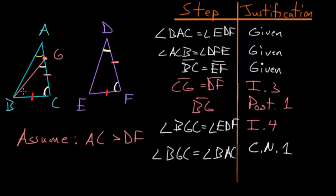But if we take a closer look at this angle BGC, we can notice that it's an exterior angle to the triangle ABG. And due to Book 1, Proposition 16, we know that exterior angles are always greater than opposite interior angles. So in other words, this angle BGC would have to be bigger than the angle BAC.